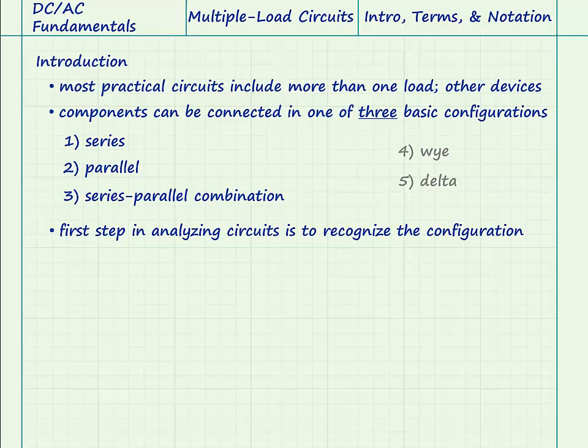The first step in understanding how a circuit operates is to recognize the type of circuit configuration—Series, Parallel, or Series Parallel. This is because the ways in which the electrical principles are applied in analyzing the three types of circuit connections are somewhat different.